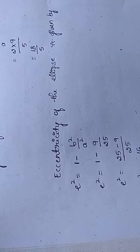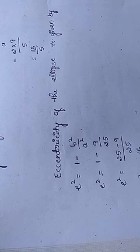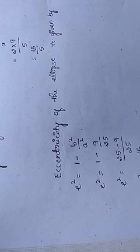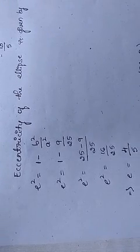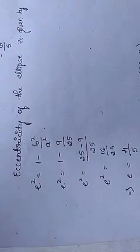The eccentricity is given by e² = 1 − b²/a² = 1 − 9/25 = (25 − 9)/25 = 16/25. Therefore e = 4/5.